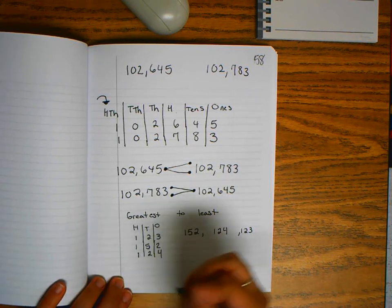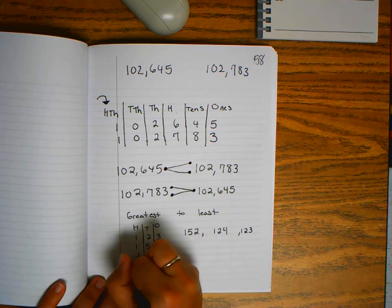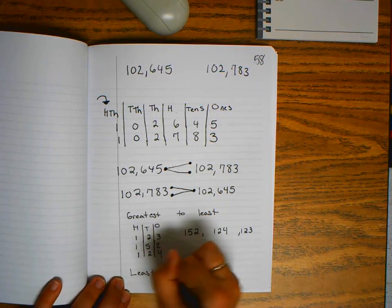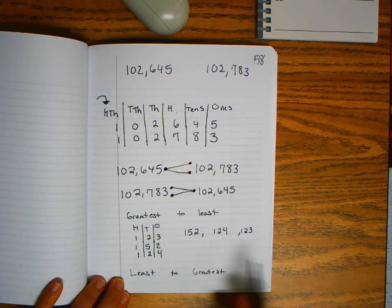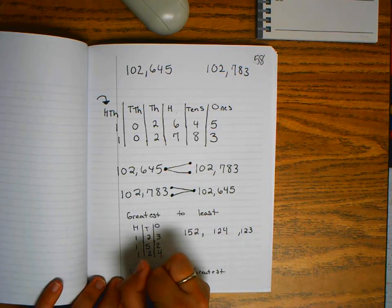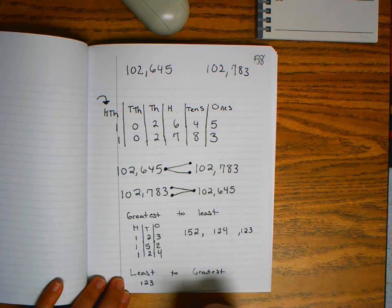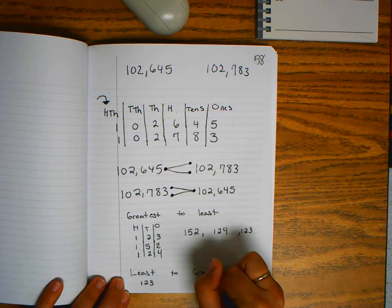If it said least to greatest, that means you start with the smallest number and end with the largest.